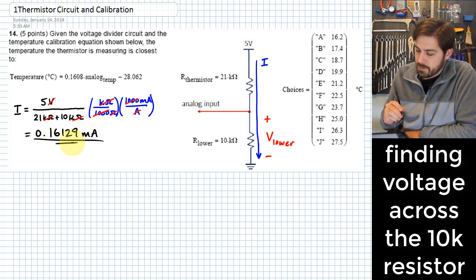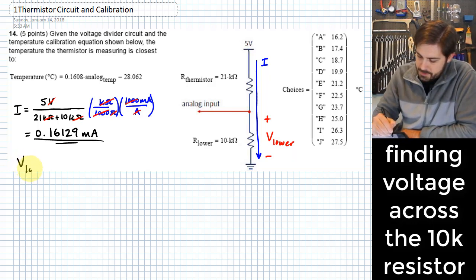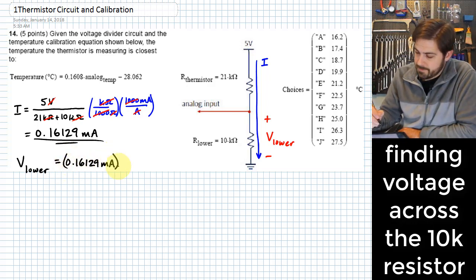Alright. Now that I have the amount of current that flows through this whole circuit right here, I can use that, along with the fact that I know this resistance value here, to figure out what the voltage is across that lower resistor. So the voltage across the lower resistor is just going to be equal to that current, I, multiplied by the amount of resistance that I have, which is 10 kilo ohms.